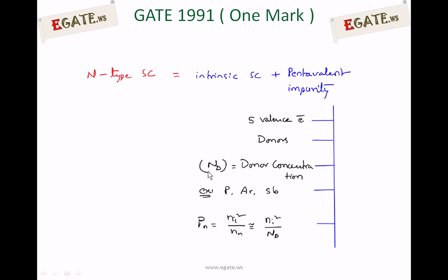This is indicated as Nd — donor concentration — the number of pentavalent atoms added to get N-type semiconductor. Nd is approximately equal to Nn, meaning Nd itself is treated as majority carriers. Examples of pentavalent impurities are phosphorus, arsenic, and antimony. Once majority carriers are calculated, minority carriers can be found using the mass action law, which states that under thermal equilibrium, the product of free electron concentration and hole concentration equals the square of the intrinsic carrier concentration (ni²).